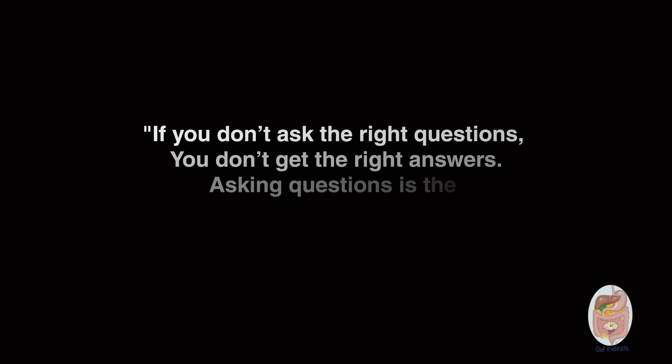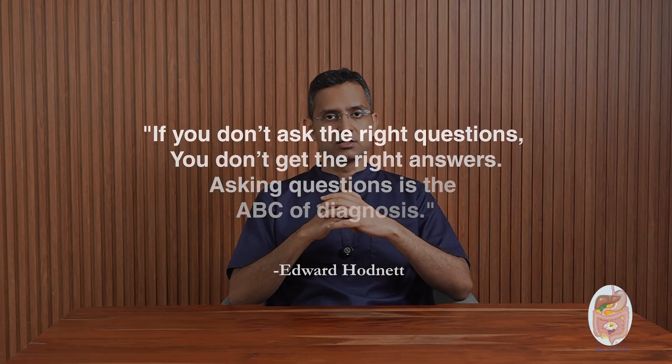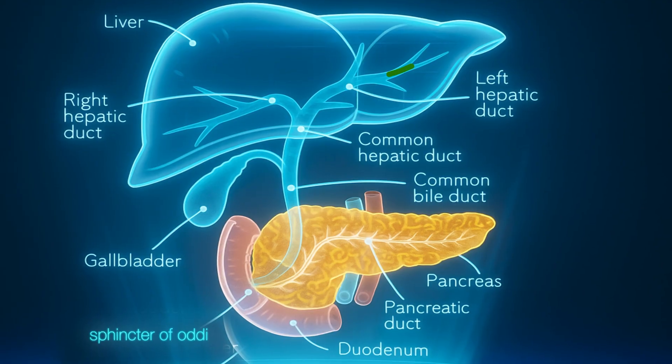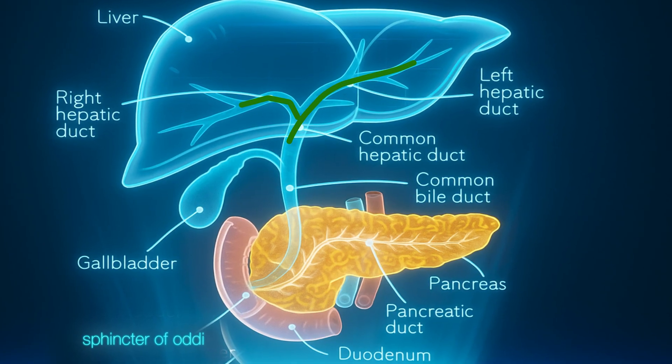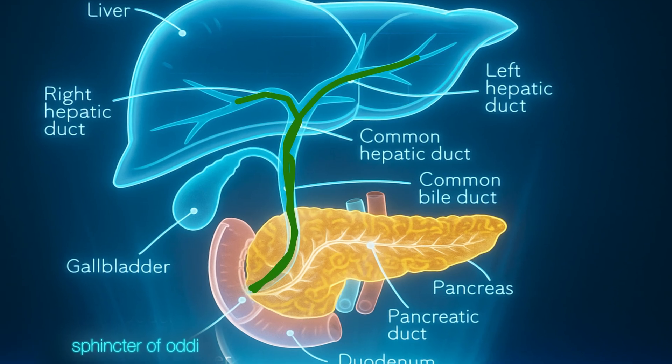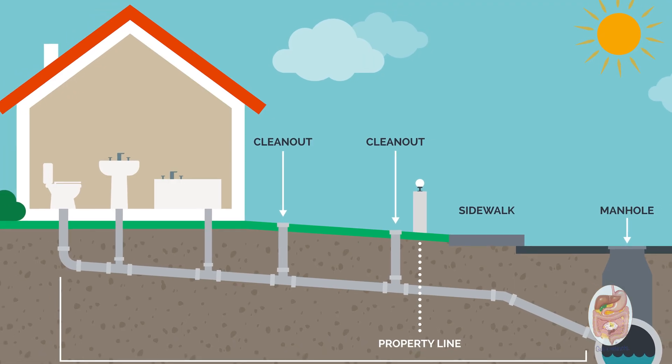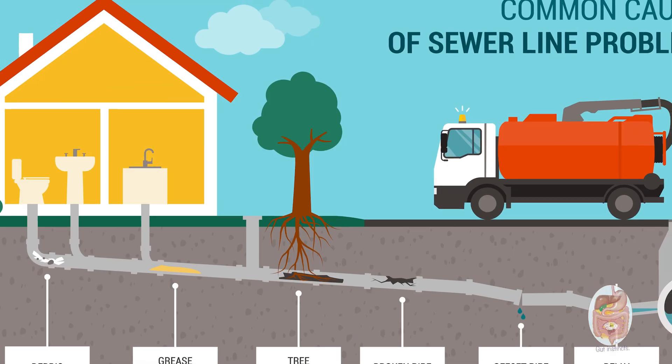Edward Harnett, a 20th century American author and educator said, 'If you don't ask the right questions, you don't get the right answers. Asking questions is the ABC of diagnosis.' Here's how your liver's plumbing works: it squirts bile into a tree-like network of bile ducts, which drain into the main bile duct, then to your small intestine. The gallbladder is like a storage tank for bile acids sitting right beside the main duct. Think about your bathroom's drainage system — that will help you understand the concepts of this topic. If the drainage system gets blocked, things will get messy quickly.